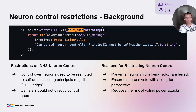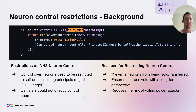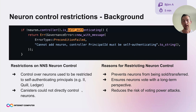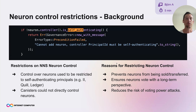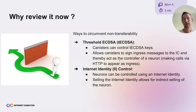Next, we'll talk about neuron control restrictions. I'm Bieran from the research team. Neuron control used to be restricted to self-authenticating principals — for example, Internet Identity or hardware device-controlled neurons. Canisters could not directly control neurons. The reason for this restriction was to prevent neurons from being sold or transferred and to ensure neurons vote with a long-term perspective.